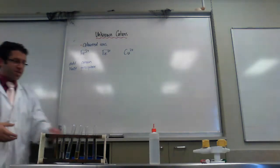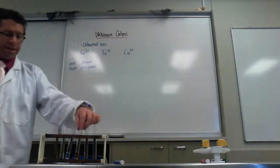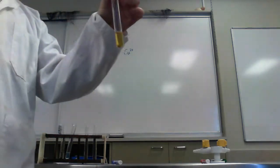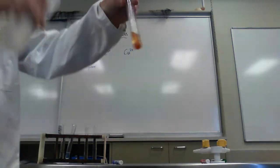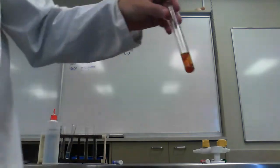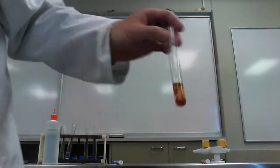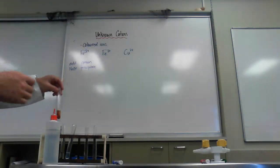If I add it to the Iron 3+, then you'll see that we get a rust, not surprisingly, a rust colored precipitate. So we get an orangey brown precipitate.